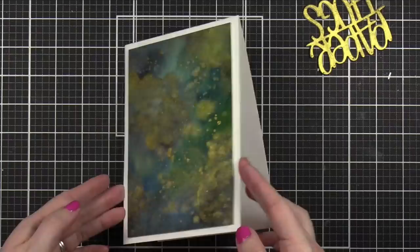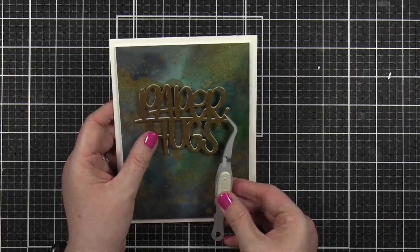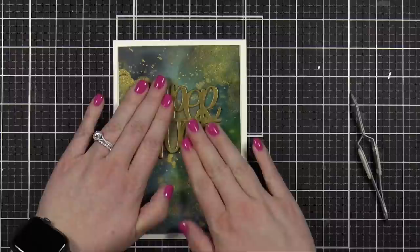After I put some foam tape behind my watercolor background and pressed it onto my card base, I then used some of that same glue. In this case, it's Honey Bee Precision Glue. And I put it on the back of my die cut. And then used some tweezers to put that die cut directly on the front of the card. And that finishes the card for today.